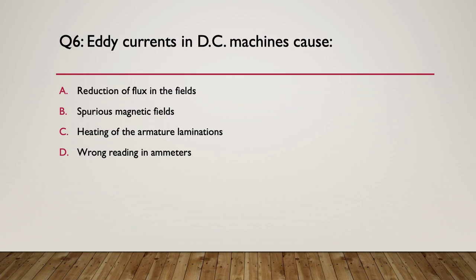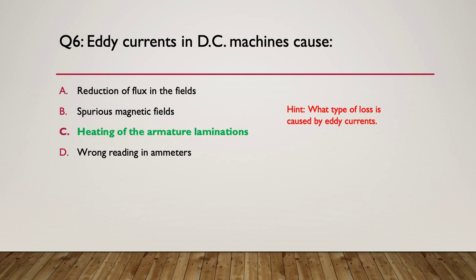Question six: eddy currents in a DC machine are caused by what? A: reduction of the flux in the fields. B: spurious magnetic fields. C: heating of the armature laminations. Or D: wrong reading in the ammeters. Pause here. Here's your hint — what type of losses are caused by eddy currents? Think about eddy currents: what are they, where are they found? The answer is heating of the armature laminations.